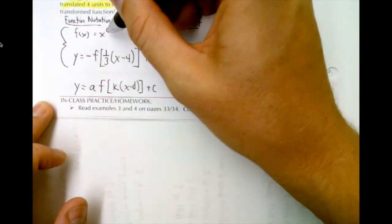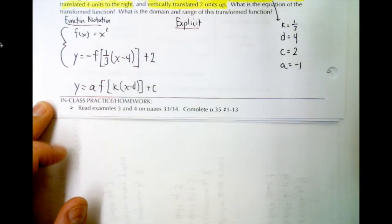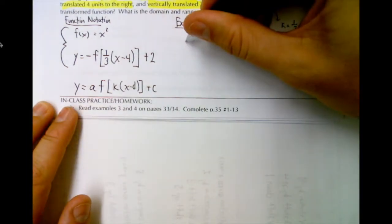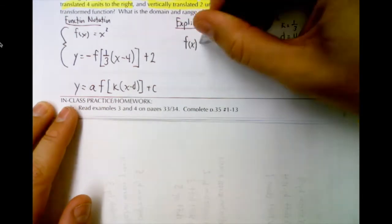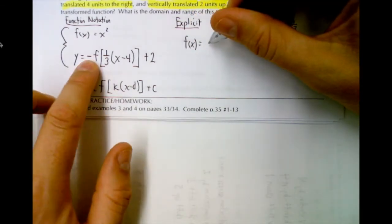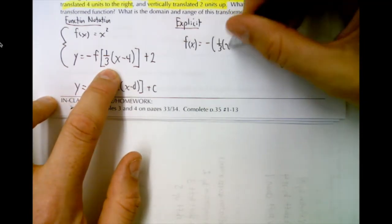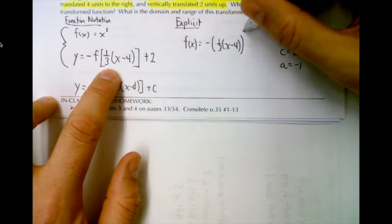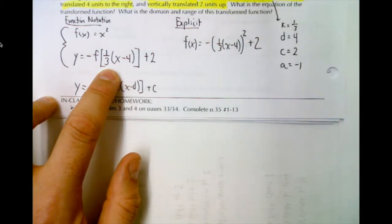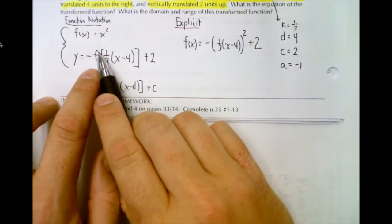So wherever f is and that big square bracket, we're going to replace it with the equation which is x squared. So our explicit equation would be f of x equals negative bracket one third x minus four all squared plus two. We're taking the square bracket and the f and replacing it with what is happening to x, and that's it's being squared.